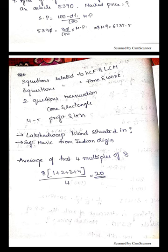Mensuration had questions on rectangles. Profit and loss had 4 to 5 questions.